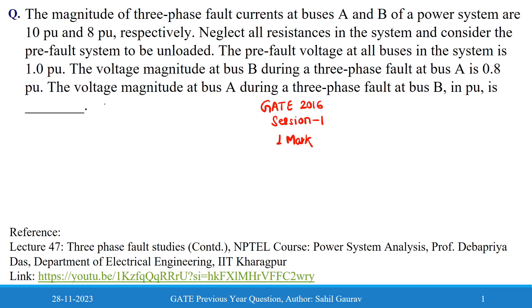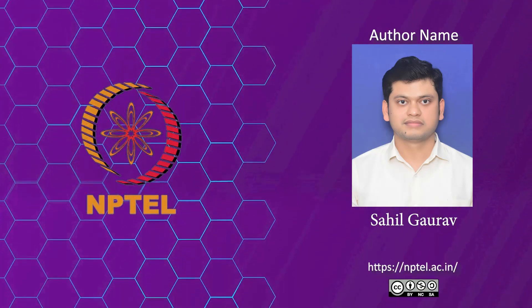So the correct answer for this problem is 0.84 per unit, and the examiner has given the range 0.83 to 0.85 per unit. That's all, thank you.